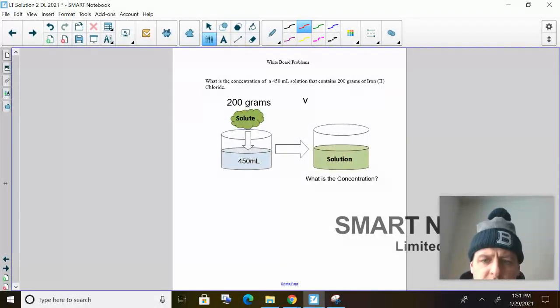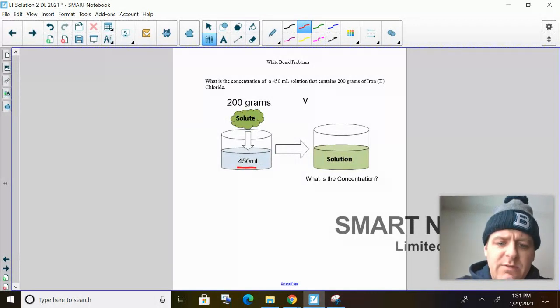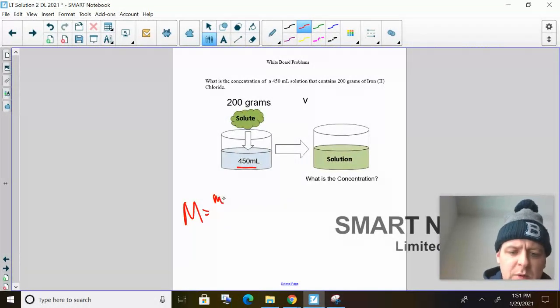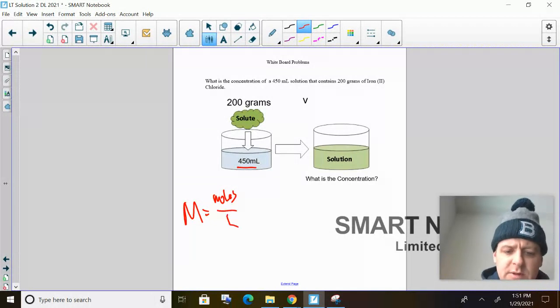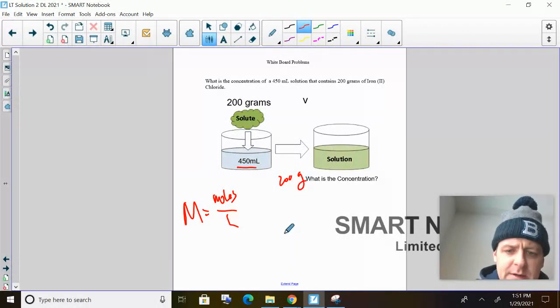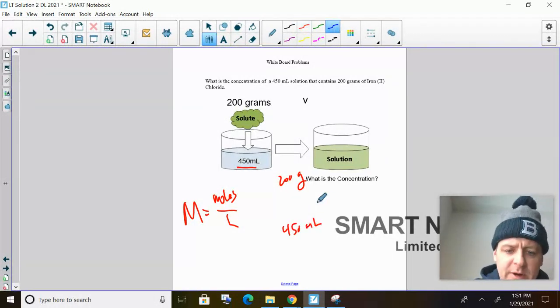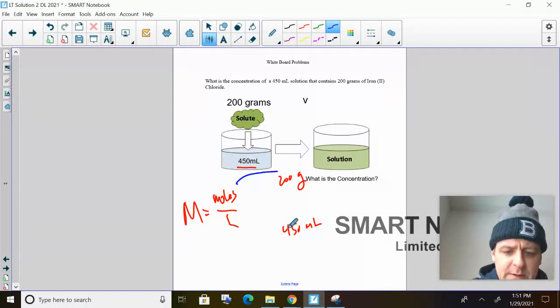Here's another one. So you got 200 grams of iron 2 chloride. We want to find the concentration in a 450 milliliter solution. So here's what I got. I got moles over liters. Moles over liters. So I have 200 grams. And I got 450 milliliters. So I don't have any of these variables. Well, I have to get there then.